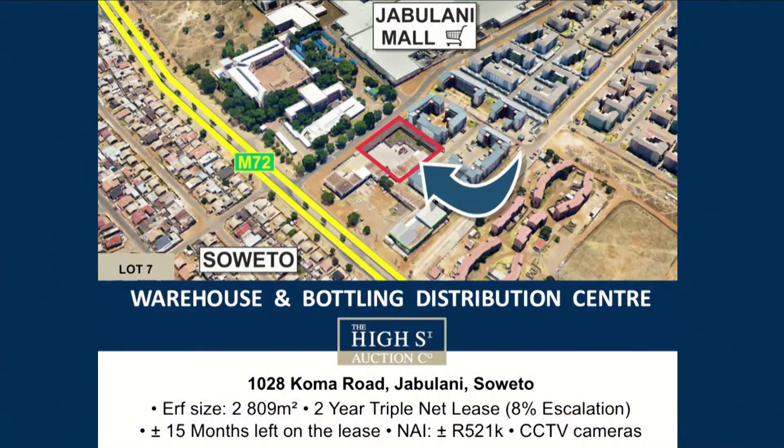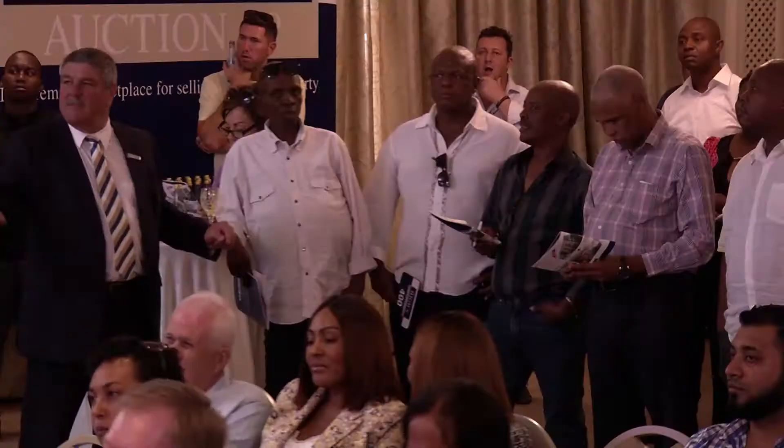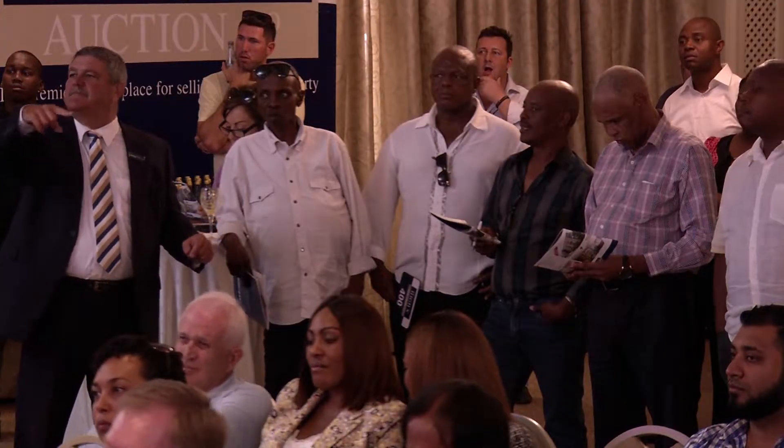Lot number seven. We have an opening bid of 2 million rands, and we have it going now. 2 million to go, give it away, have it at two. And it's huge — you've got a lease as well. You're in for three, sir. At three, give it away, have it at three now.